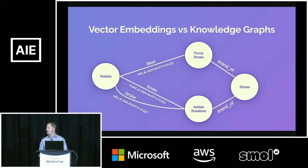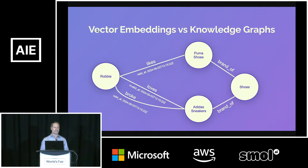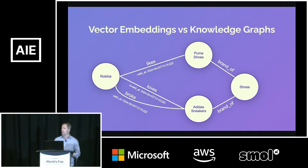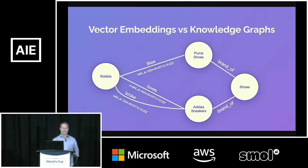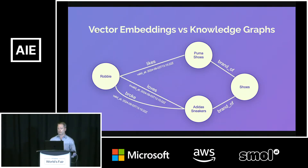However, when we look at knowledge graphs, we can define explicit relationships. Graphs can model the why. And at Zepp, we've got them to model the when as well — behind the preference change — which adds a temporal dimension that your agent can reason over. And this structural difference is fundamental to how memory should work.